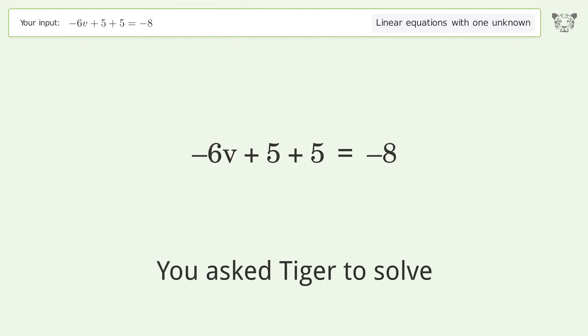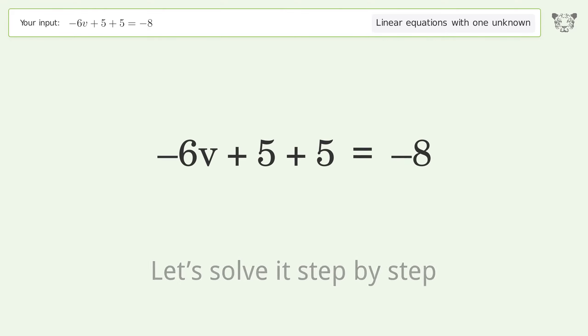You ask Tiger to solve this. This deals with linear equations with one unknown. The final result is v equals 3. Let's solve it step by step. Simplify the expression. Simplify the arithmetic.